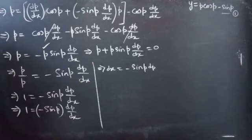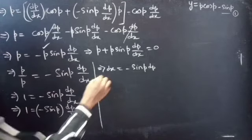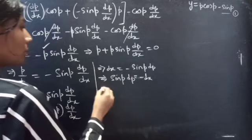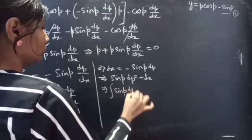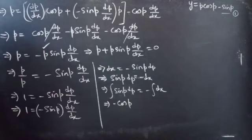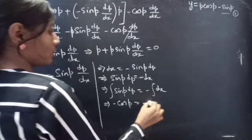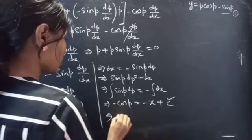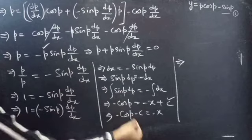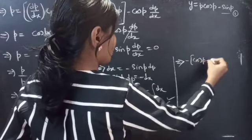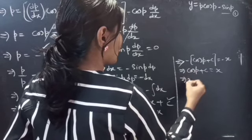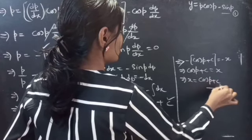This becomes dx equals minus sin(p)·dp. The variables are separable so we can integrate on both sides. Or we can write this as sin(p)·dp equals minus dx. Now let's integrate. This gives integral of sin(p)·dp is minus cos(p), equals minus integral dx which is negative x, plus C. Taking C to the LHS: minus cos(p) minus C equals minus x. Taking minus common from the LHS gives cos(p) plus C equals x, or x equals cos(p) plus C.